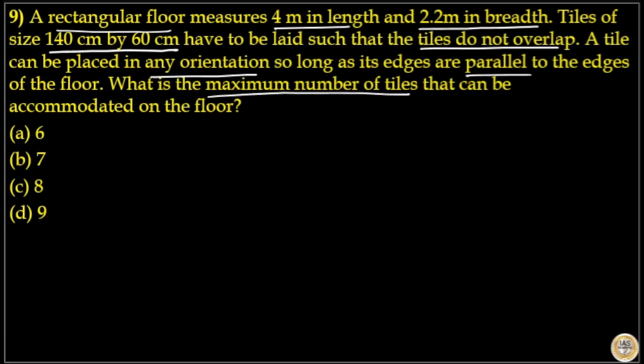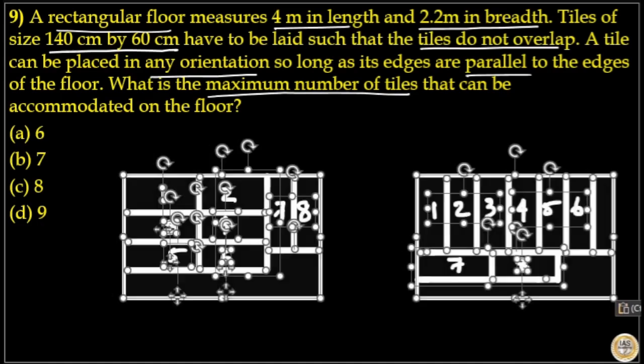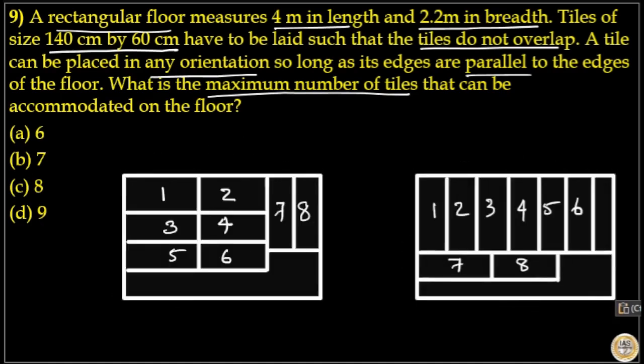So as per the dimension here, you can only place 8 tiles on the floor. Here floor length is 4m, that means 400cm. Again, floor width is 2.2m, that is 220cm.